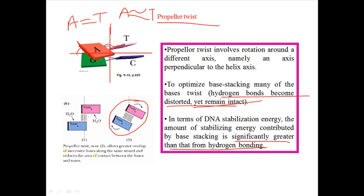Normal twist and normal rotation align the bases so they can form hydrogen bonds, but the propeller twist helps to stack these bases much more efficiently because they need to stack with each other via hydrophobic interactions.